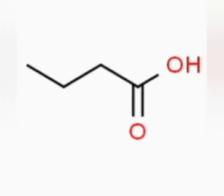Butyric acid is also known as butanoic acid. It is an oily colorless liquid with an unpleasant odor and belongs to a group of short-chain fatty acids. It is said to play a beneficial role in gastrointestinal tract function, is a product of fermentation within the human colon, and is an important energy source for normal colorectal epithelium.